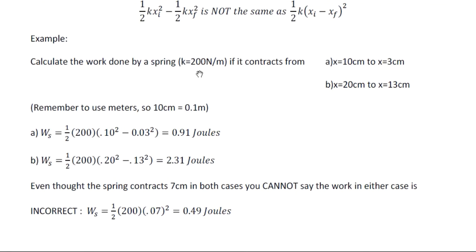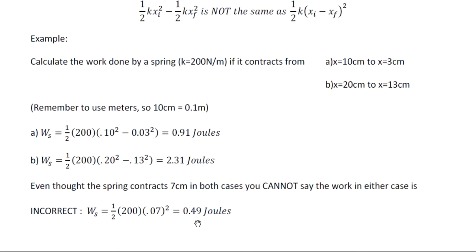Let's work through an example. We calculate the work done by a spring with a given spring constant as it contracts by seven centimeters in two cases. In example A, it contracts from 10 cm to 3 cm. In example B, it contracts from 20 cm to 13 cm. The common student mistake is to square the difference of seven centimeters and multiply by one half k. That is only correct if the spring contracts from 7 cm to zero. Simply squaring the displacement change is not the right approach.